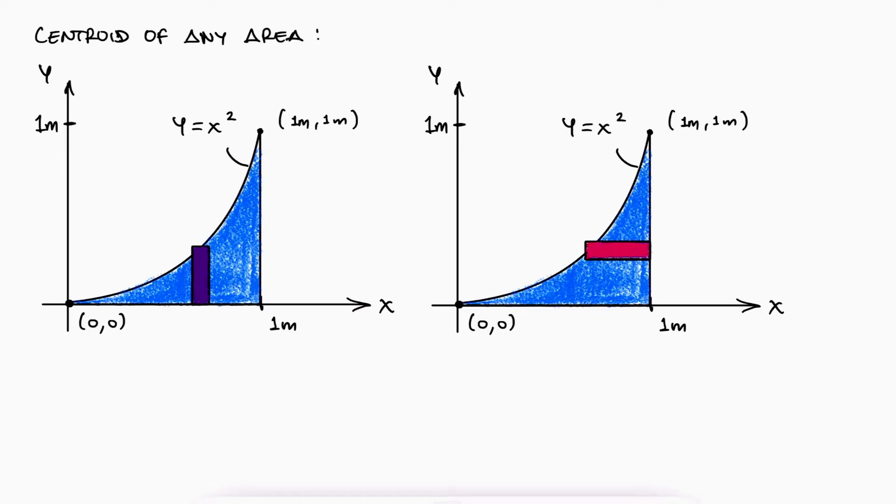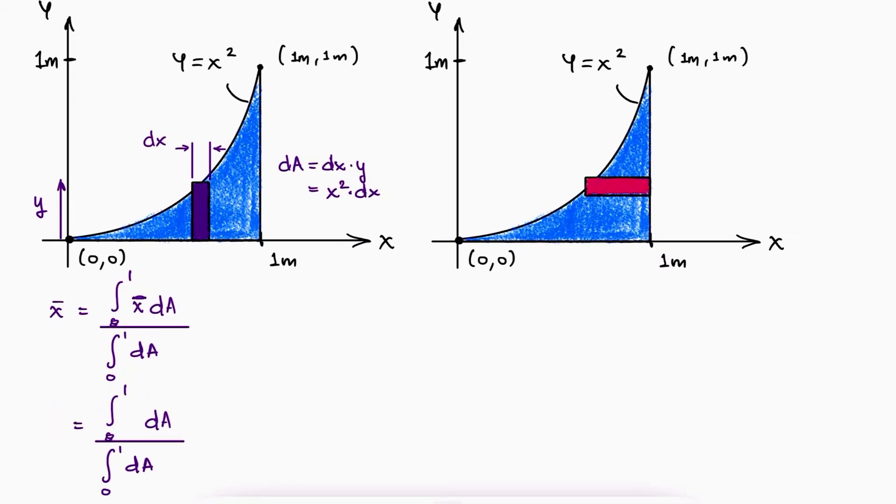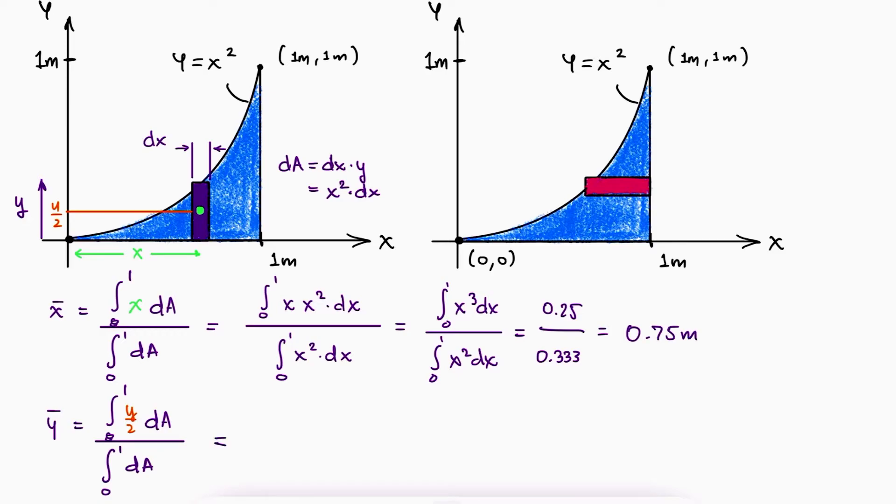For vertical rectangles, the dA would be dx times y, which is x squared times dx, and the integrals would be evaluated between 0 and 1. The centroid of the rectangle would be at x for x bar, and at y over 2 for y bar. Substituting the dA and evaluating the integrals, we find that the x coordinate for the centroid x bar would be at 0.75 meters, and that the y coordinate for the centroid y bar would be at 0.3 meters.